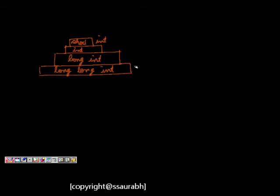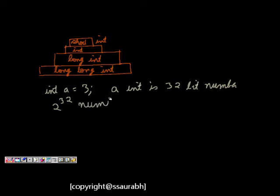Now we will look at something about finding the size. Let's say int a is equal to 3. On our machine, let's say int is 32 bit number. This means that we can have 2 to the power of 32 numbers that can be represented.